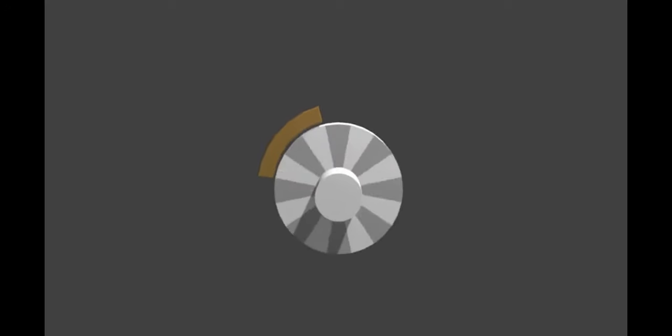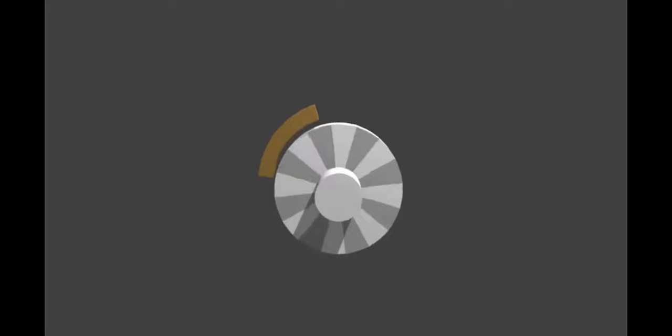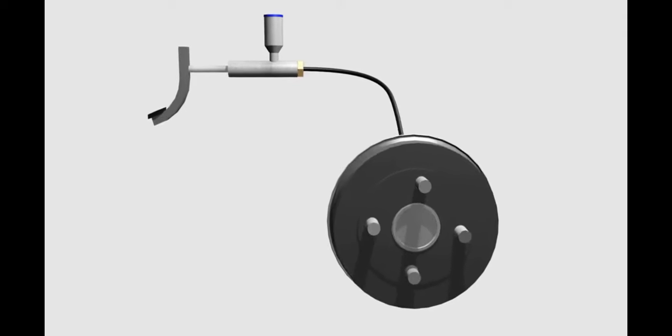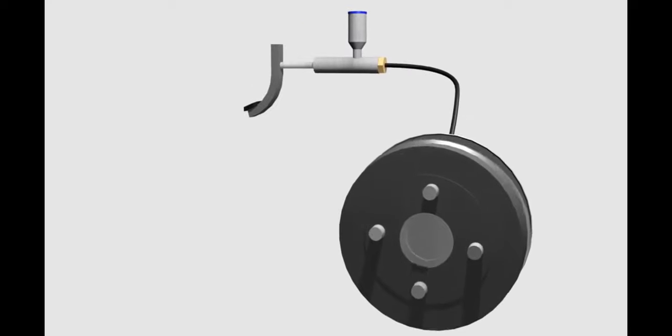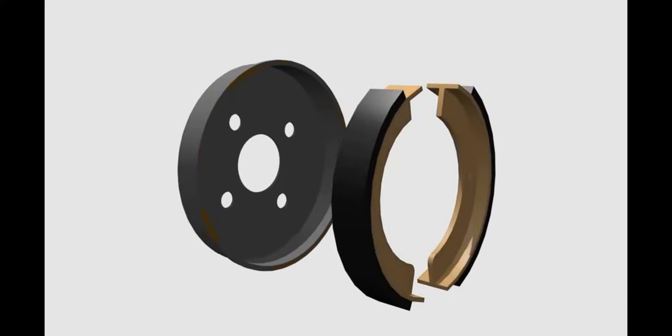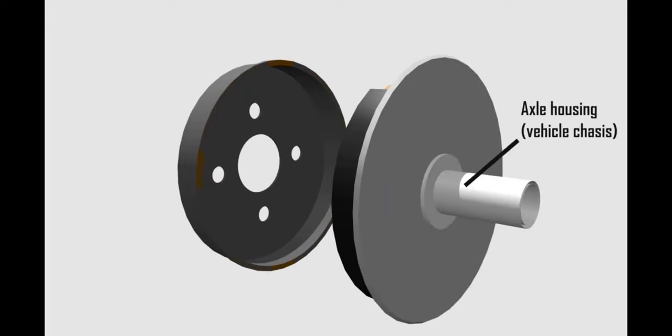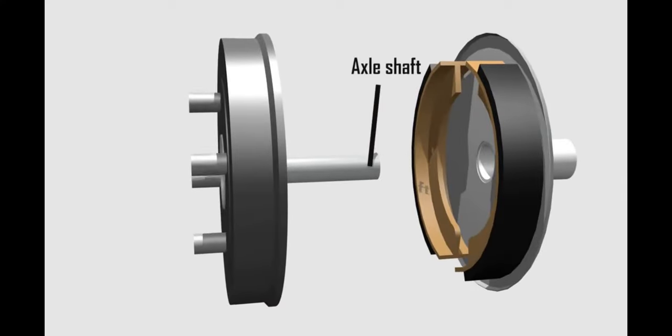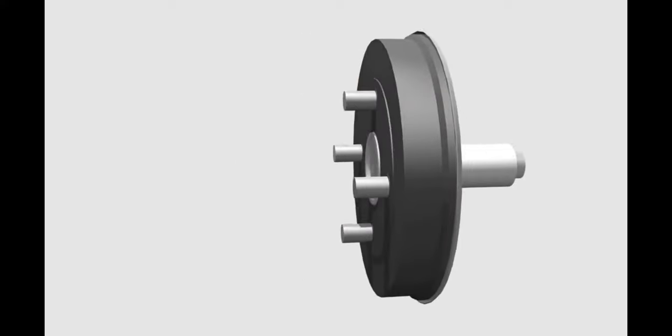The working principle of the brake system is to rub fixed objects onto a rotating object — as a result, the rotating object stops. Drum brake is a type of brake system with a closed design. In a drum brake system, the fixed object is called brake shoes and the rotating object is called the drum. Brake shoes are connected to the vehicle's chassis while the drum is connected to the axle shaft. It's called a closed design because the brake shoe position is inside the drum.